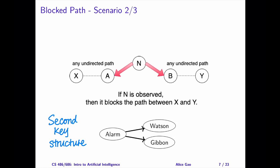This rule is similar to the second key structure. If we observe alarm, then Watson and Gibbon become independent.